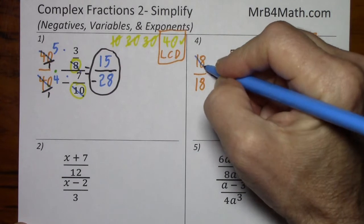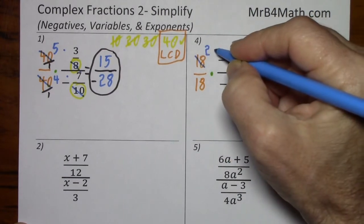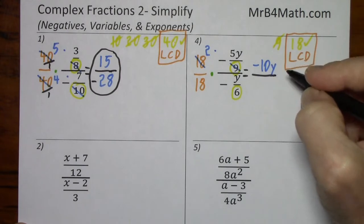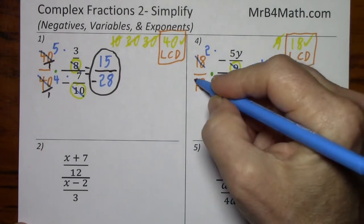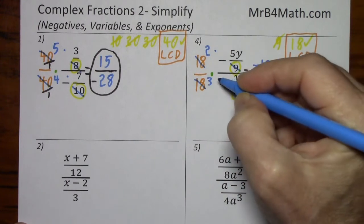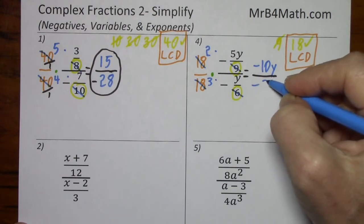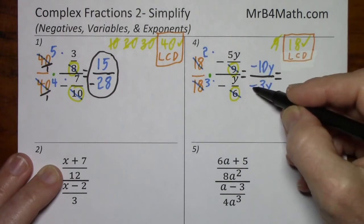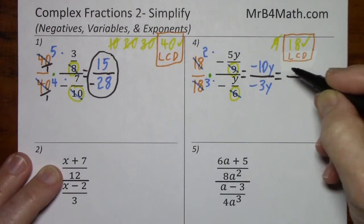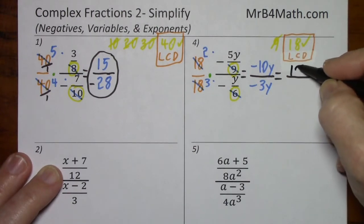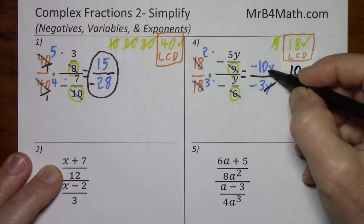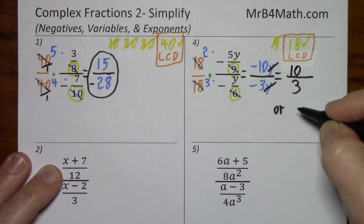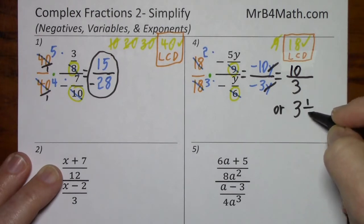Divide by 9 — that's a 1. Divide by 9 — leaves us with 2. 2 times negative 5y — this is negative 10y. Divide by 6, divide by 6 — leaves us with 3. 3 times negative y is negative 3y. So we can simplify this a little. Negative divided by negative is positive, so we'll have 10 thirds, and y cancels y, so there's no more variable. Now 10 thirds is simplified, but you can also write this as 3 with 1 left over — keep your denominator.